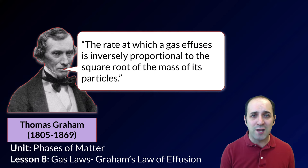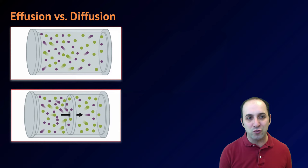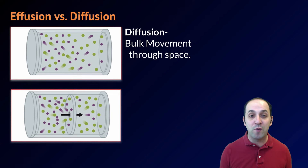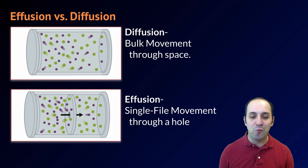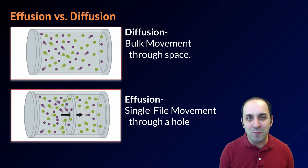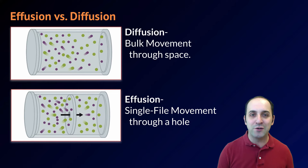Let's take a little bit more in-depth look at it. The first thing I really want to get clear on is the difference between effusion and diffusion. Here are two different pictures. The first picture shows us diffusion, which is defined as the bulk movement of particles through space. The second picture shows us effusion, which is single file movement of particles through a tiny hole. For our purposes, you don't really ever need to worry about the difference — the math is still going to work the same way.